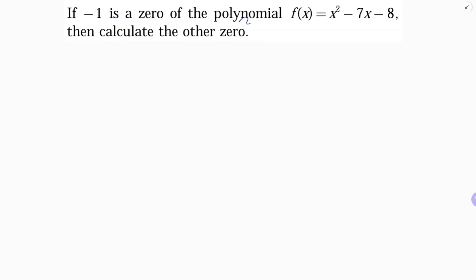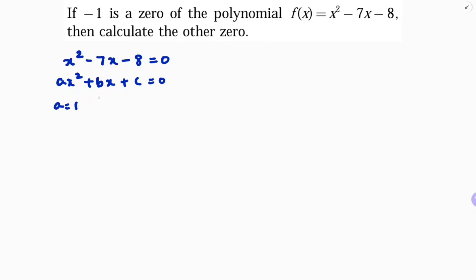If minus 1 is a zero of the polynomial f(x) = x² - 7x - 8, find the other zero. You can find the two zeros directly, or you can use the sum and product method. For ax² + bx + c = 0, here a = 1, b = -7, and c = -8.